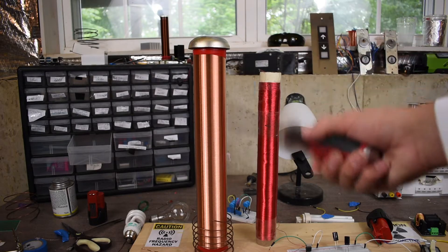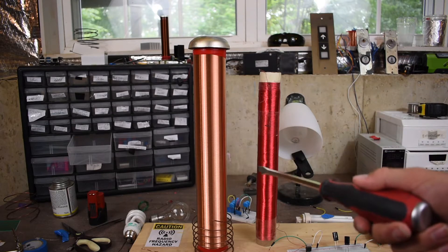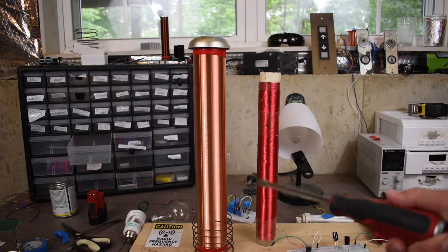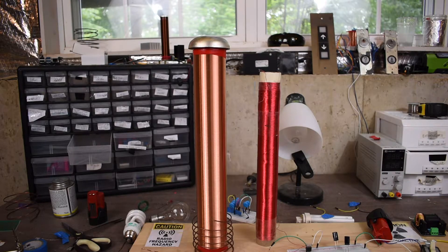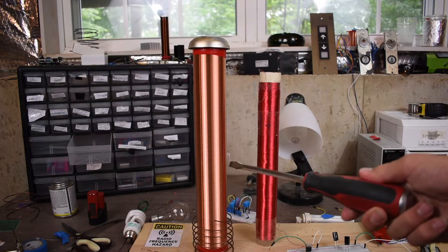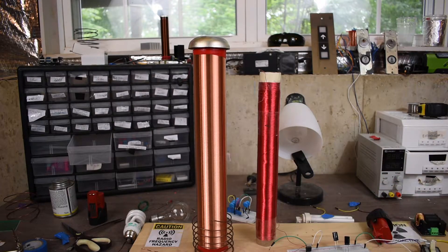Now this secondary coil over here, like I mentioned, has around a thousand turns of 28 gauge enameled magnet wire. Now make sure your wire is enameled. If these windings short out while the Tesla coil is in operation, it won't work too good. In fact, you might even start a fire.